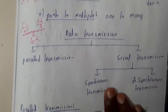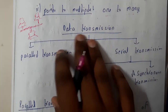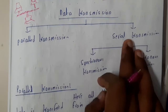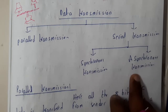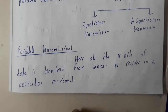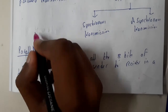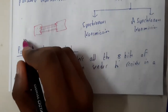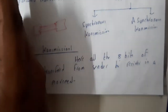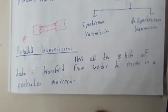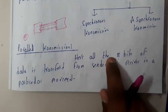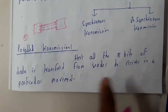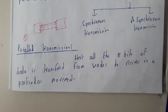Now let us go through the divisions of data transmission. Data can be transferred in parallel transmission or serial transmission. Serial is further divided into synchronous and asynchronous transmission. In parallel transmission, there will be 8, 16, or n bit data lines in which data is transferred parallelly from sender to receiver. All 8 bits are transferred at once — if it is an 8-bit line, 8 bits; if 16-bit, 16 bits; if 64-bit, 64 bits.